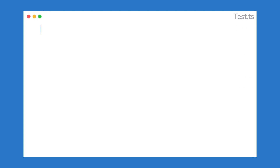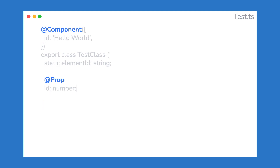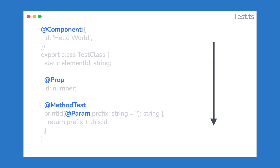We can use these decorators anywhere. For example, we can write a decorator on top of a class, next to a function parameter, or on top of a simple function. The execution is from top to bottom, meaning that the class decorator is executed first and then chronologically the decorators that follow it.